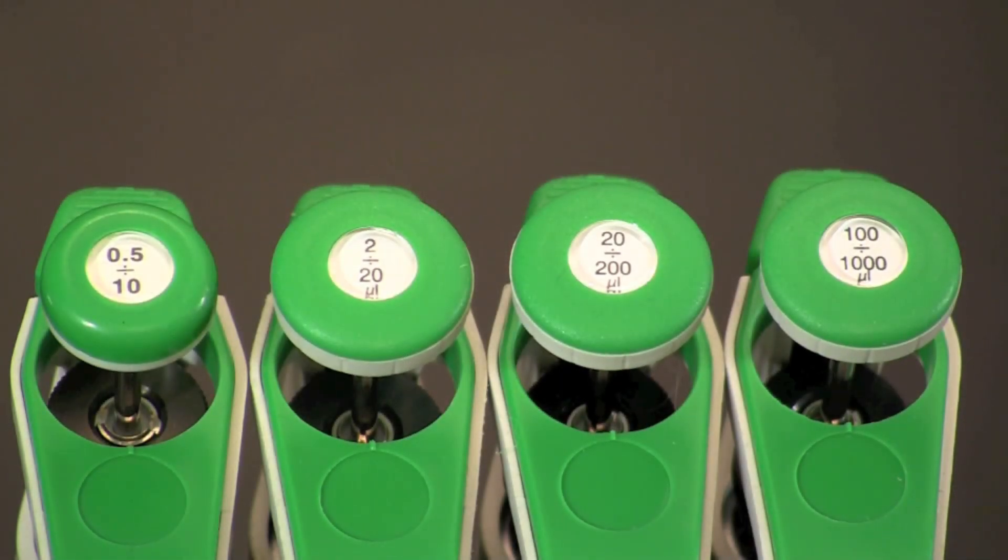The volume range for a micropipette can be found on the top of the plunger button. The most commonly used ranges for micropipettes include the 0.5 to 10 microliter, the 2 to 20 microliter, the 20 to 200 microliter, and the 100 to 1000 microliter. In each case the two numbers indicate the range between which the pipette can measure with accuracy.